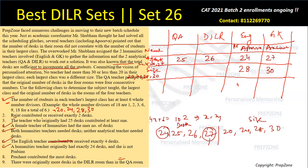Rajat contributed or received exactly 2 desks. DILR has 26 desks and the only valid class size that gives a difference of 2 is 24 (26 − 2 = 24). So DILR class size is 24, and Rajat is the DILR teacher.